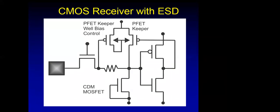I had an example of a customer whose receiver protection levels dropped to 2,500 volts after introducing a keeper. When I suggested cutting it off if not needed, the results went up to 7,000 volts. So sometimes a simple feedback element can drop the ESD protection of a receiver by 5,000 volts. By introducing the proper device, results went back to normal. My book on ESD circuits has chapters on this subject.